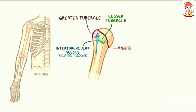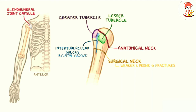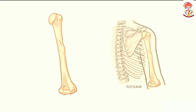Between these two tubercles there is a narrow groove called the intertubercular sulcus or bicipital groove, because the tendon of the biceps brachii muscle passes through it. Just below the humeral head there is the anatomical neck of the humerus, formed by a groove separating the humeral head from the greater and lesser tubercles, and this is where the glenohumeral joint capsule attaches. Distal to the tubercles there is the surgical neck of the humerus, which is where the broad proximal part of the humerus meets the narrow humeral shaft. This makes the surgical neck relatively weaker and thus a common site for humeral fracture.